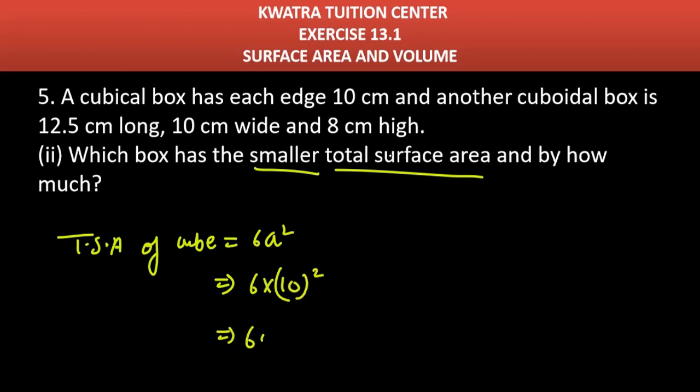So it will give me 600 cm². Now TSA of cuboid, what is TSA of cuboid? We know the formula, it is 2(lb + bh + hl). It's very easy to learn line-wise. And how much of a value?